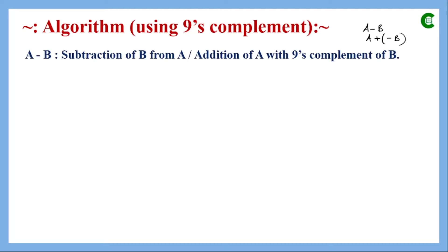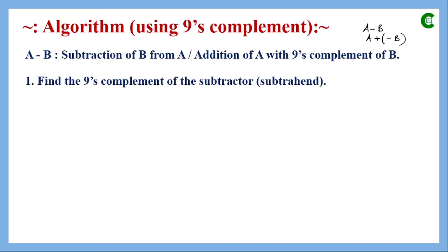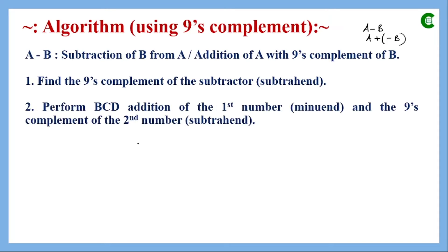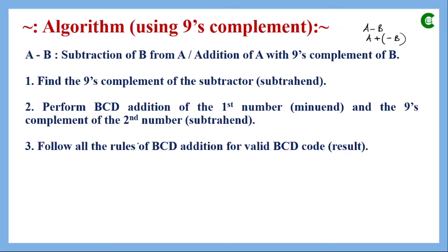In the first step, we find the 9's complement of the subtractor (the second number b, which is negative). The first number is positive, so we represent it in its equivalent BCD or binary form. In the next step, we perform BCD addition between the first number in BCD and the 9's complement representation of the second number.